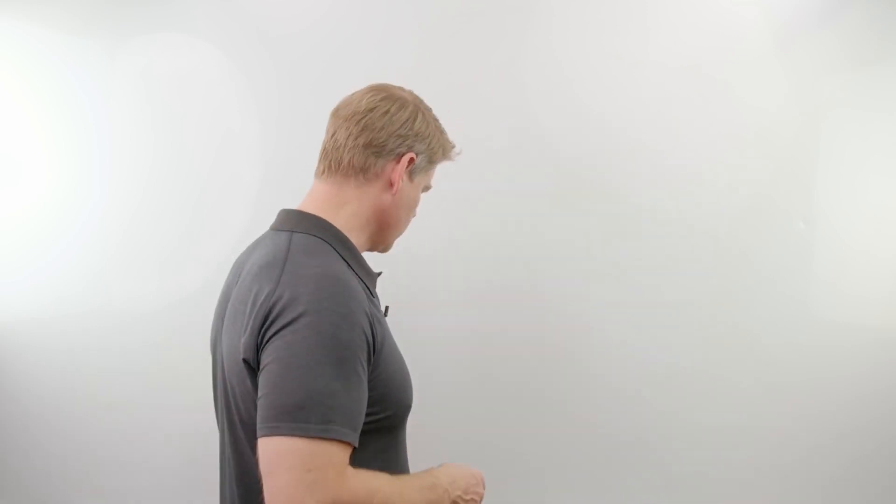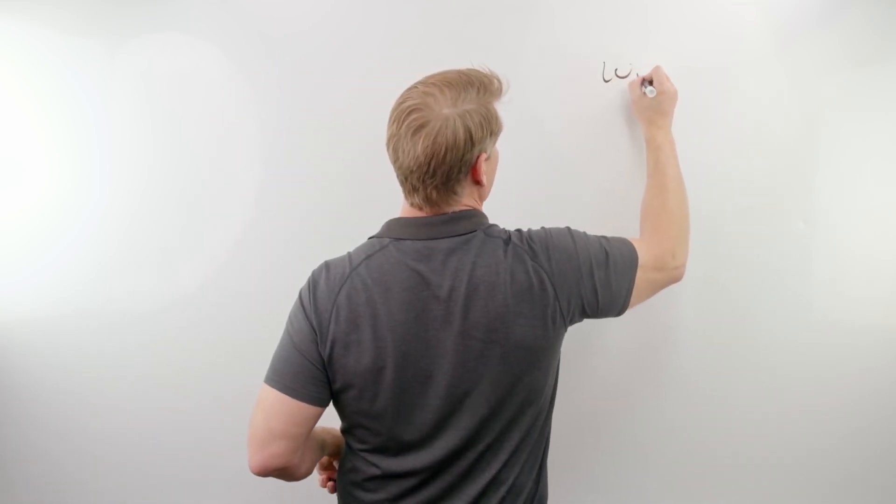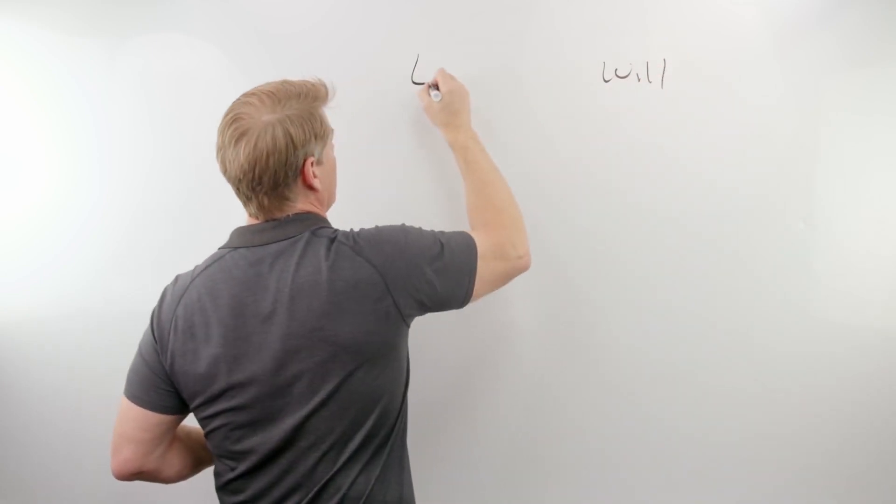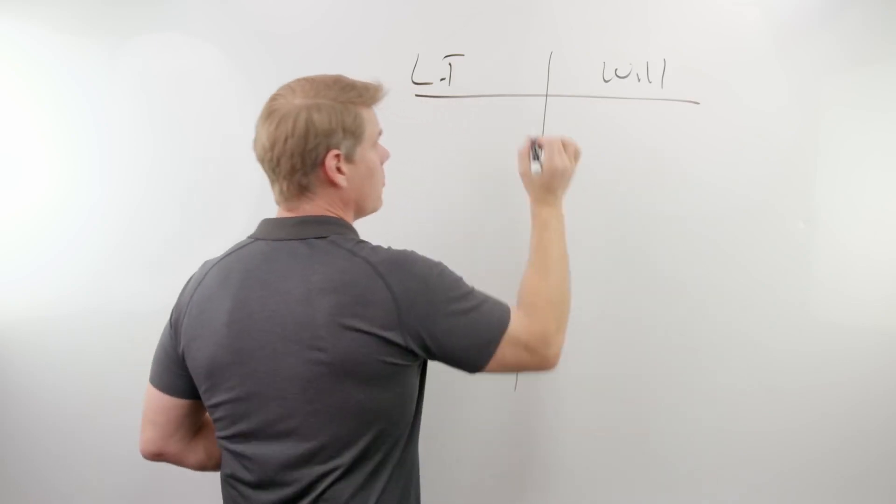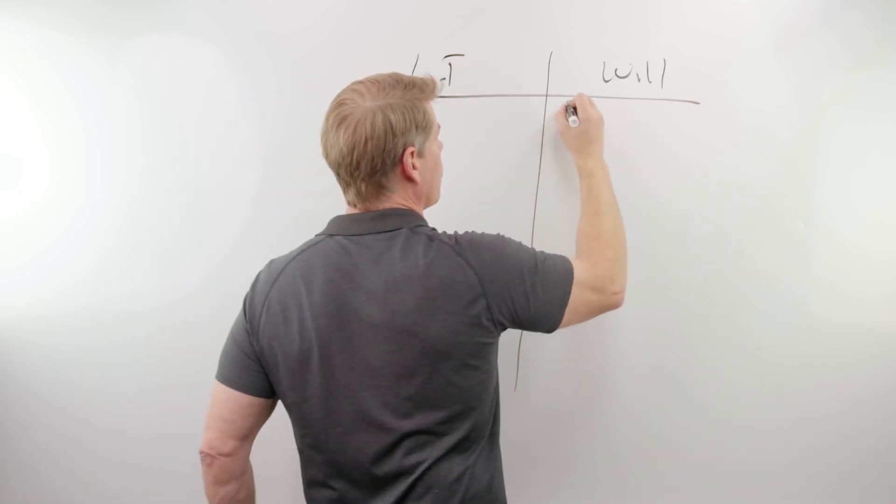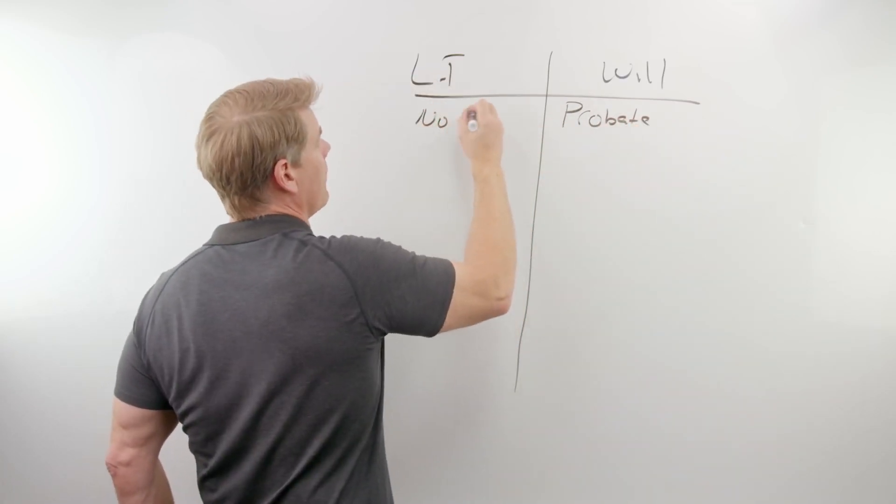Well, when it comes to wills, the things that make it so attractive for attorneys to set up a will versus a living trust, and I'll explain these as I go along, is that in a will, you have to go through probate. With a living trust, there's no probate.